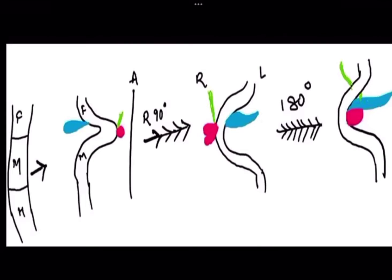Hello everyone. Today I'm here with a topic of congenital variants and anomalies of the pancreas and pancreatic duct, and their imaging using MRCP. Before starting with the actual anomalies, let's review the anatomy first so that it becomes easy to understand.